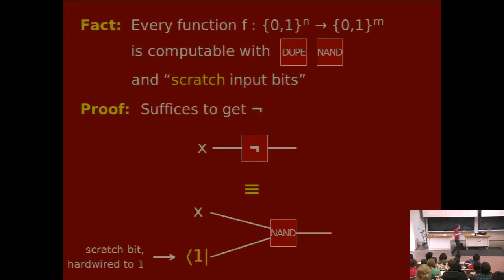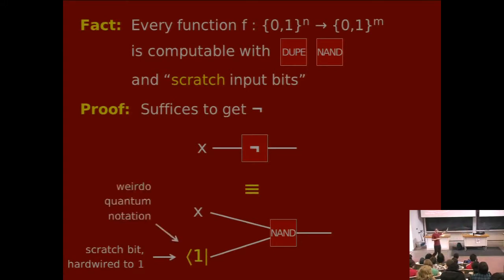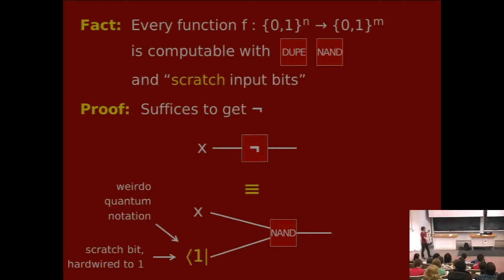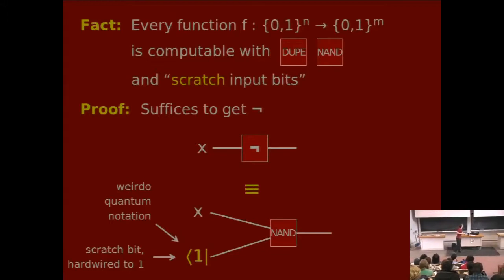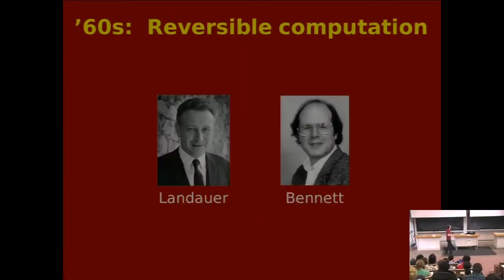For the purpose of this lecture, I'm going to change this notation and write the bit 1 in this bizarre asymmetric brackets thing — some weird notation invented by quantum mechanics people, but we're going to use it in this class. This just means the bit 1. So now flash forward — still no quantum — flash forward to the 1960s. We're going to talk about a topic called reversible computation.